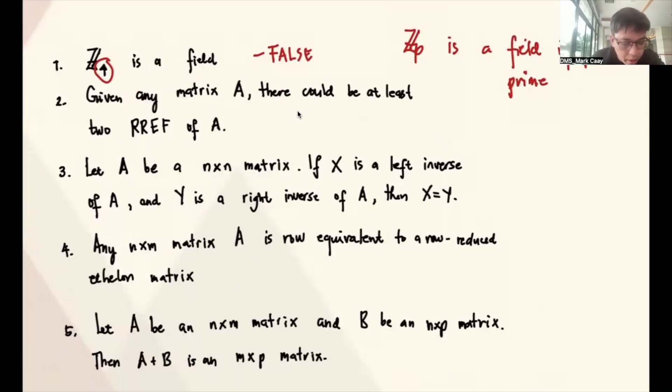For number 2, given any matrix A, there could be at least 2 RREF of A. So let's double-check. We have a remark already that the RREF is unique. So it's only one.